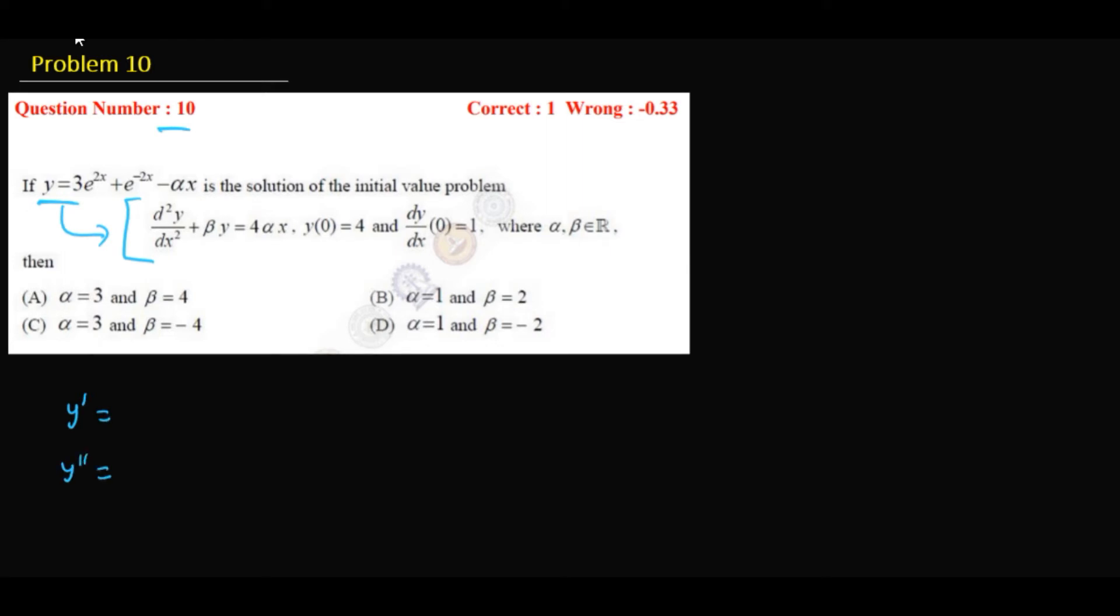So y prime is 6e^(2x) - 2e^(-2x) - alpha, and y double prime will be 12e^(2x) + 4e^(-2x). Now we just need to substitute this y and y double prime in the given differential equation.